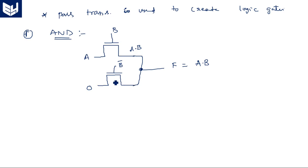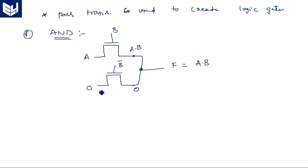The second NMOS transistor has input 0 and control input B-bar. When control input is 0, output is 0; when it is 1, the transistor is open-circuited so output is still 0. Whatever the case, the second transistor output is simply 0. The two transistor outputs are connected together, giving F = A·B + 0 = AB, which is the AND operation.